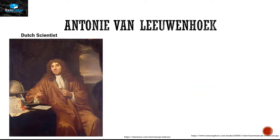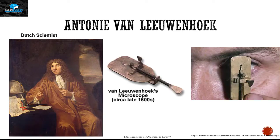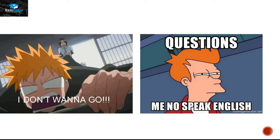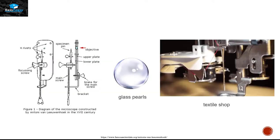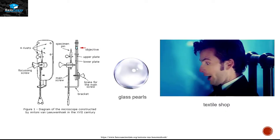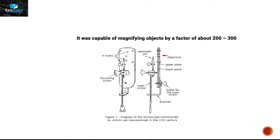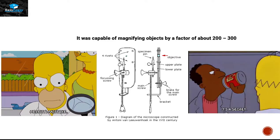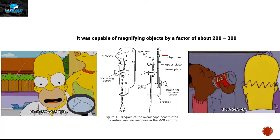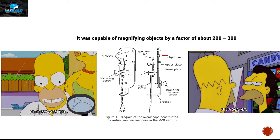Another Dutch scientist, Anthony van Leeuwenhoek, discovered his own microscope in the late 1600s. Leeuwenhoek was not actually a scientist at that time — he never went to school and didn't know any language other than Dutch. He made his microscope using a glass pearl commonly used in textile shops to see the quality of clothes. His microscope was capable of magnifying objects by a factor of about 200 to 300, and he never revealed his secret of how he made it, in order to avoid competition.